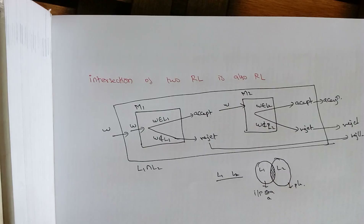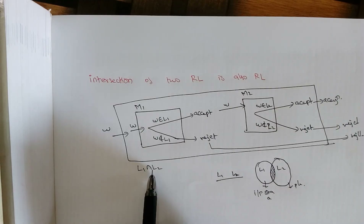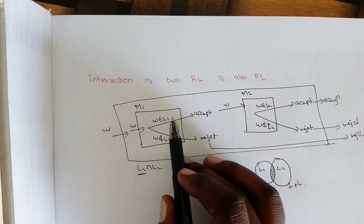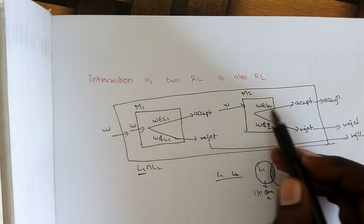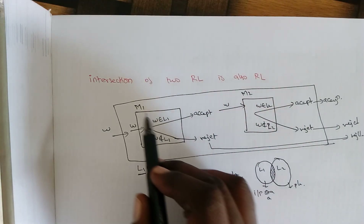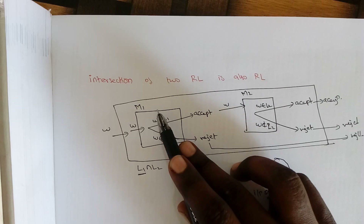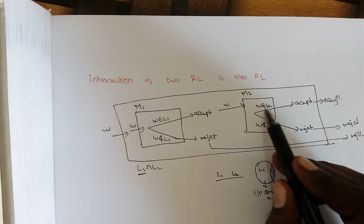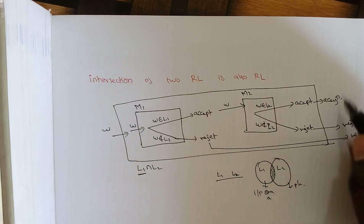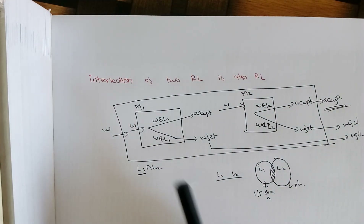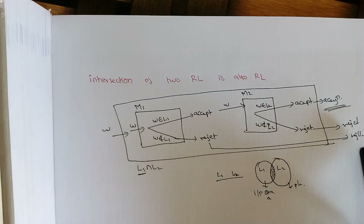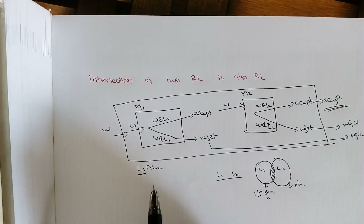To prove that the intersection of two recursive languages is also recursive: first we check whether the input is accepted by L1 using machine M1. If M1 accepts, we send the input to machine M2 for L2. The input is accepted only if both machines accept it; if either rejects, the input is rejected. Since acceptance and rejection are properly defined, the intersection of two recursive languages is also recursive.